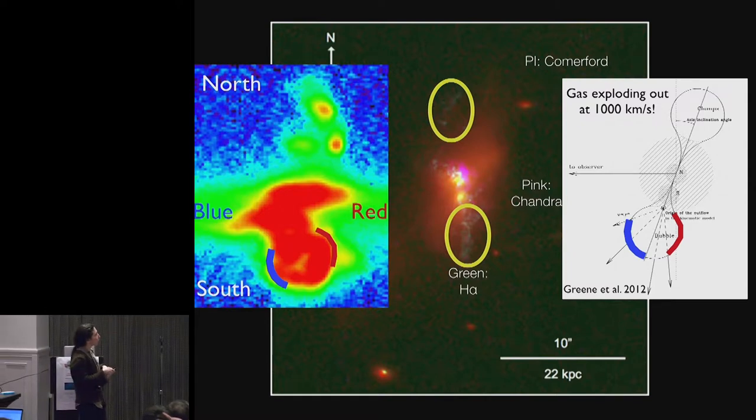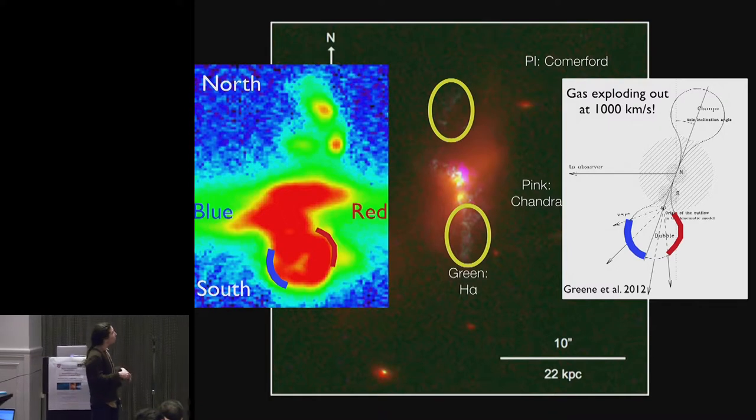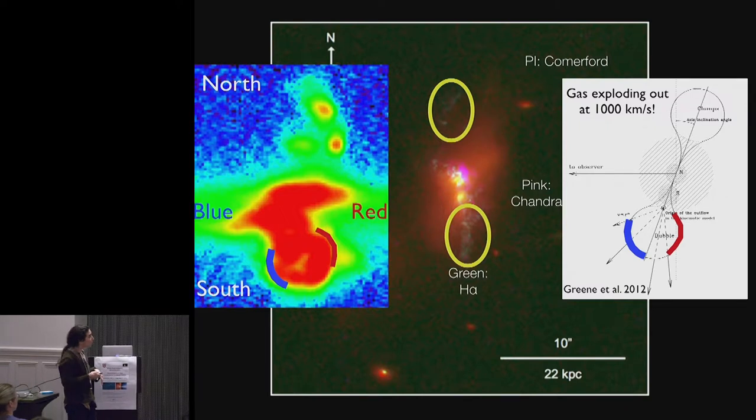We have very strong constraints on the star formation in this galaxy. It's not forming stars, and in my business, star formation is one of the largest problems because we know stars drive large winds.